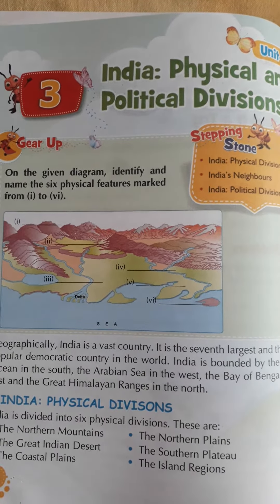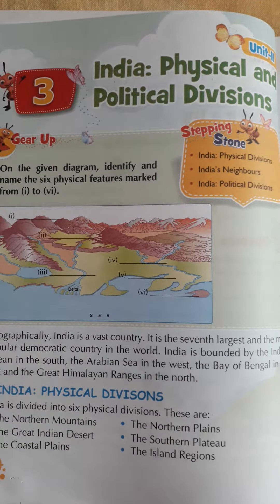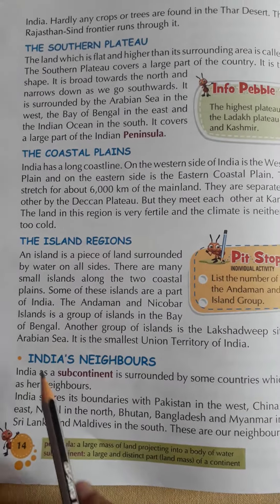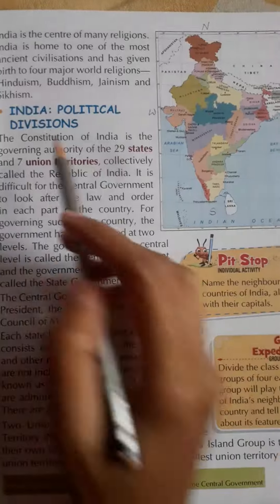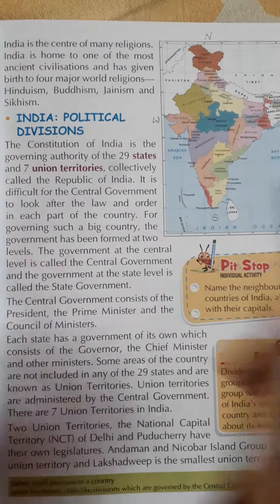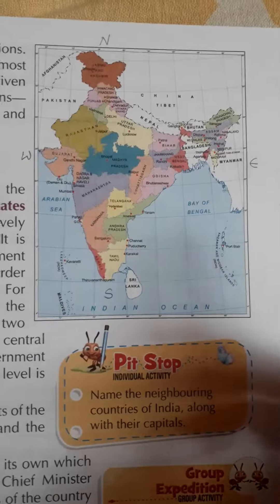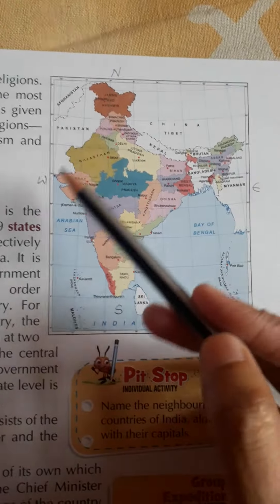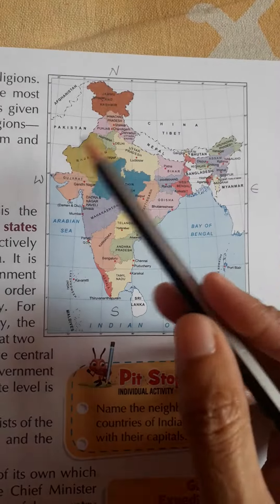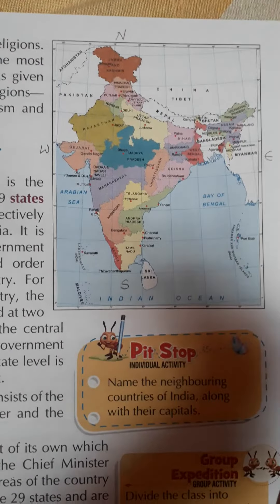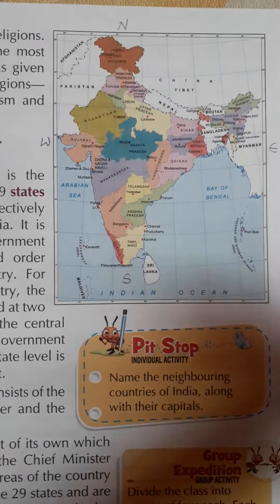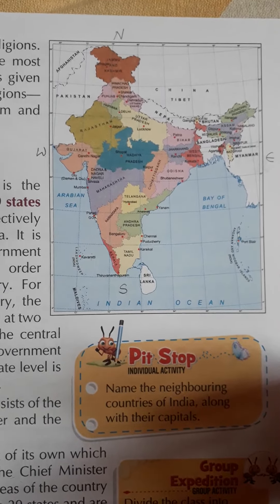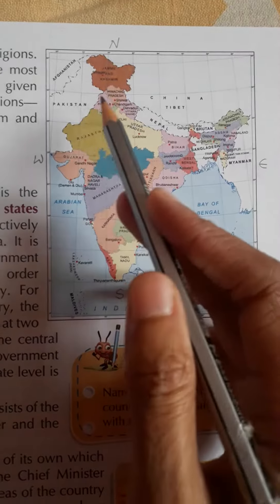Hello children, in our previous class we studied India's physical divisions. Today we will study about India's neighbors and India's political divisions. Neighbors means the countries surrounding us — just like nearby houses in our neighborhood, India also has neighboring countries that share its boundary.